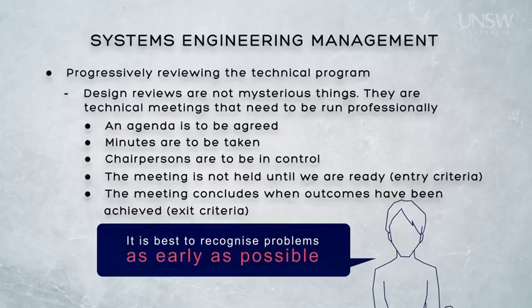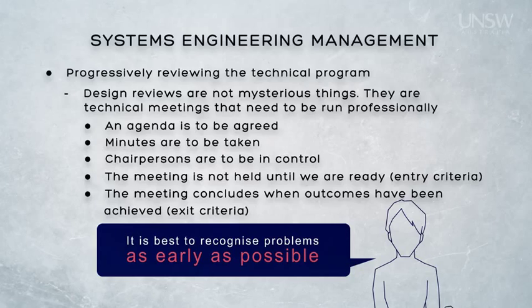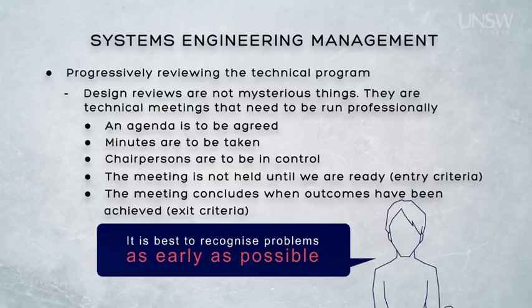Systems engineering planning must take account of the technical program and plan for these design reviews. Design reviews will take time, cost money and will involve a number of different people — that's why planning for them is important. The number and nature of technical reviews will be different for every single project, so we must think about every project as a unique undertaking. A risky project using developmental technology and involving large sums of money will be reviewed more thoroughly than a project at the other end of the spectrum.